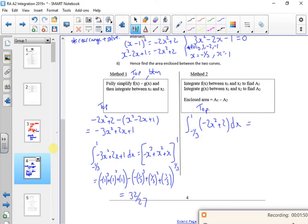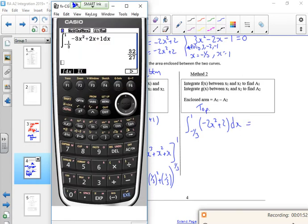I'm just going to use my calculator straight off for time. So integrate minus 2x squared plus 2. Press right from minus a third. Press right off the fraction. Press right again to get the 1. So that gives me 160 over 81.